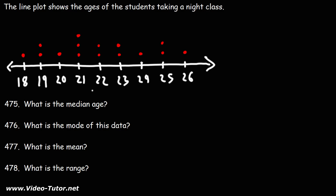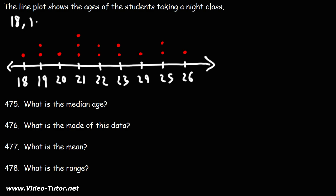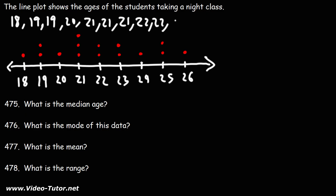At 18 we only have one dot, which tells us there's one student at 18. We have two dots at 19, so there are two students with the age of 19. There's one at 20. The frequency for 21 is 3, so we write that three times. For 22 it's 2, for 23 it's 2, then one at 24, two at 25, and one at 26.